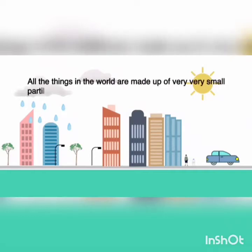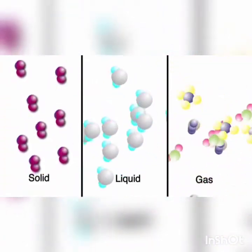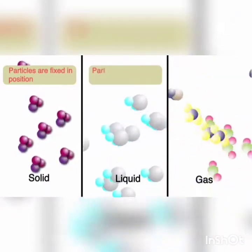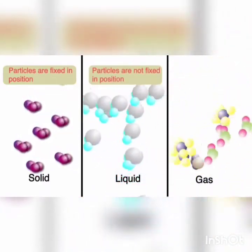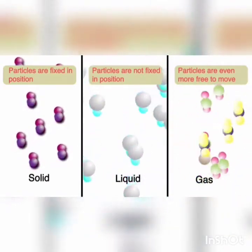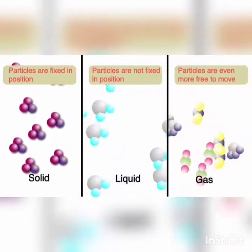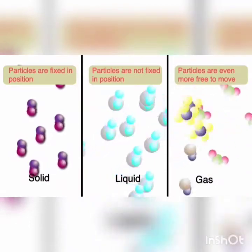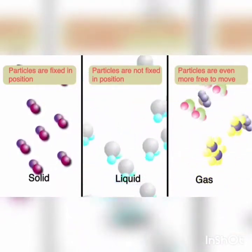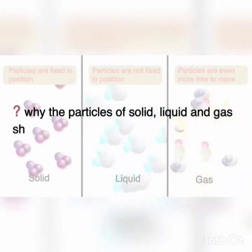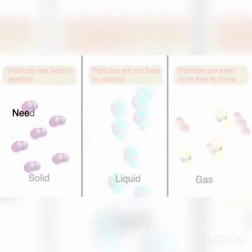Good morning students. In the previous session we have seen about what is matter — all things are made up of tiny particles and matter exists in three different states: solid, liquid, and gas. The particles in solid are fixed in position, attaining a definite shape. Particles in liquid are not fixed in position, so they don't have a definite shape. In gas, particles are even more free to move.